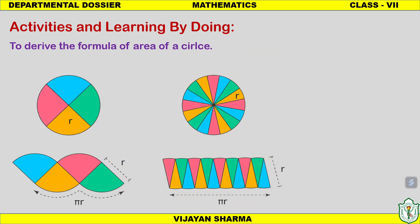One more activity derives the formula for the area of a circle, pi r squared. We cut the circle and arrange the cut parts; making more cuts arranges them into a parallelogram shape that approaches a rectangle. The area of the rectangle is length times breadth, which is pi r times r, giving pi r squared. With paper-cutting models, students can derive the area of a circle formula in the maths lab.